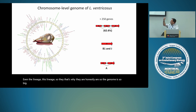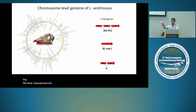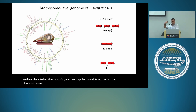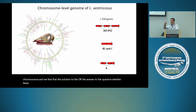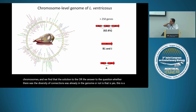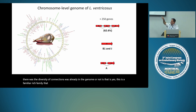We characterized the conotoxin genes by mapping transcripts onto the chromosomes, and we found the answer to the diversity question: it is yes — this is a gene-family-rich system. The conotoxin gene family has been duplicated extensively and is spread all over the genome.